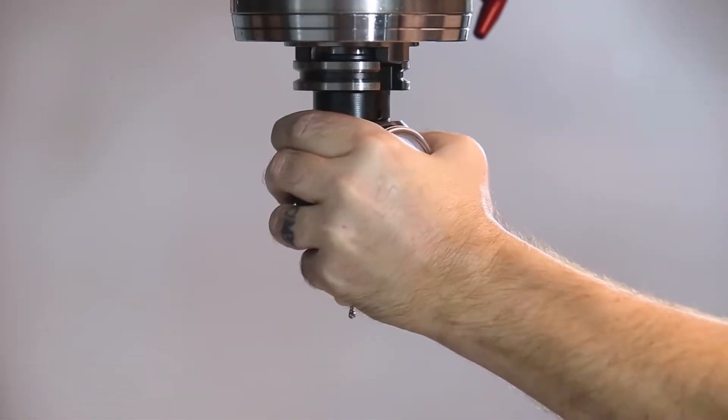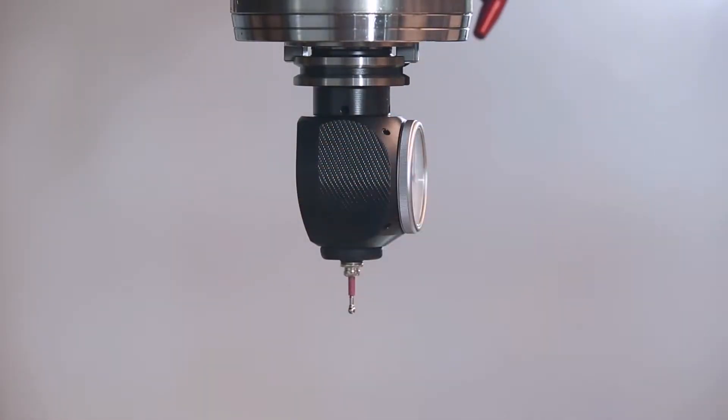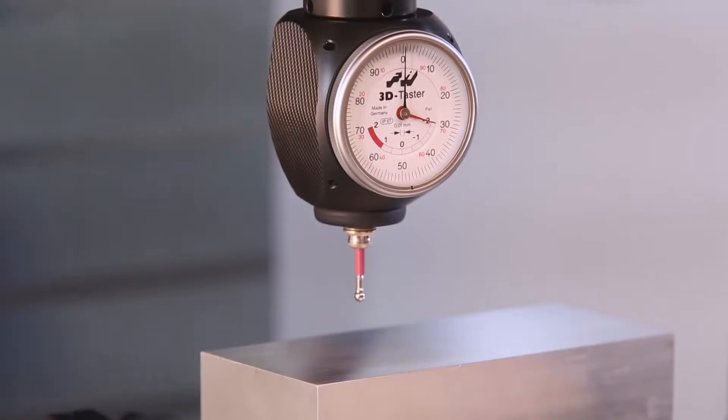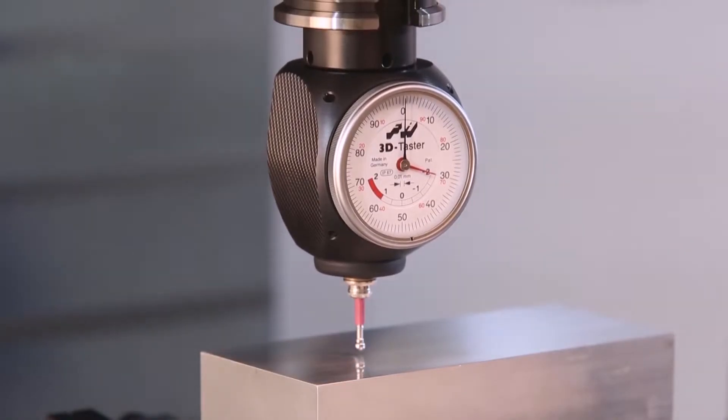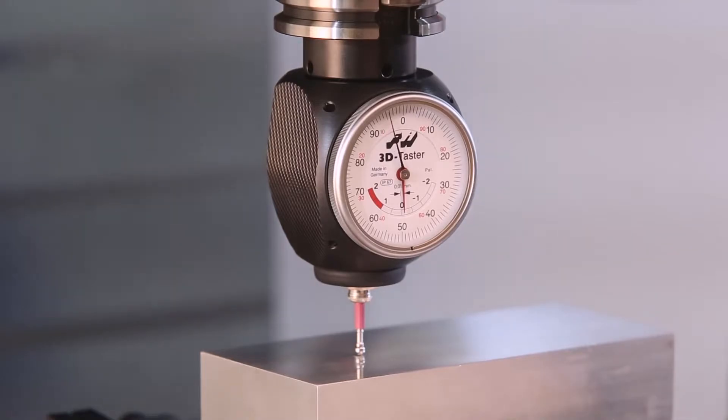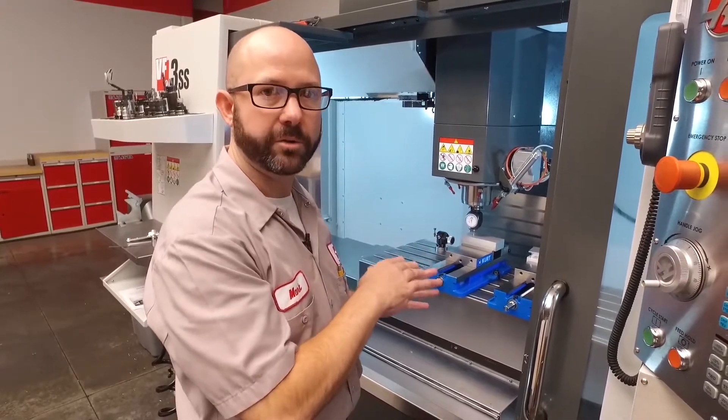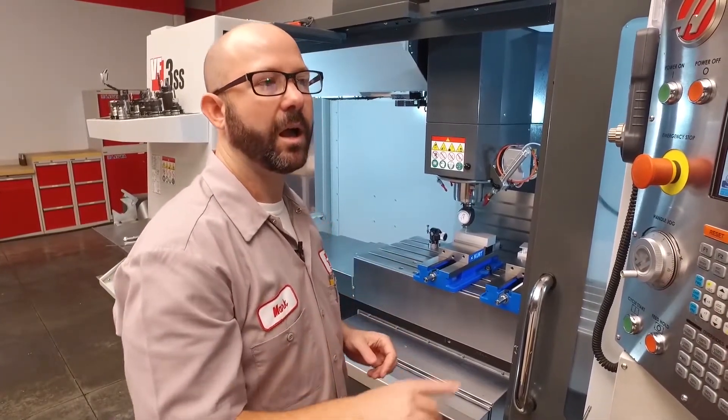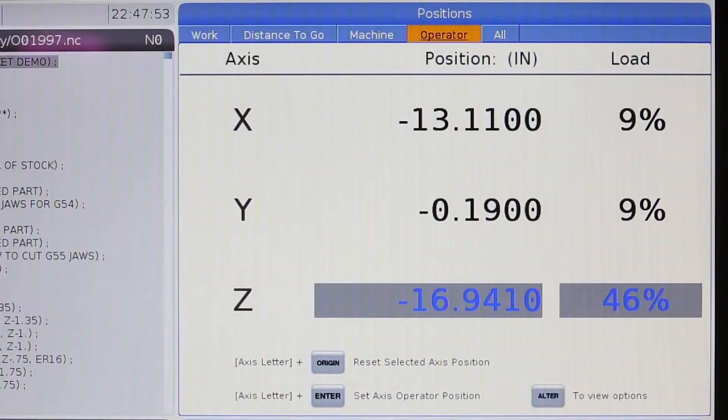Right now, I'm going to put an indicator in the spindle. And we're going to set that G55 Z value. I'm going to jog down right above our part, pretty close to where we touched off the tools. And I want to jog down until my indicator reads 0. With our indicator resting on top of our part, right where we touched off our tools, that's the important part, I'm going to go to my position screen. Then I'm going to move over to our operator column. And I'm going to press the origin button.